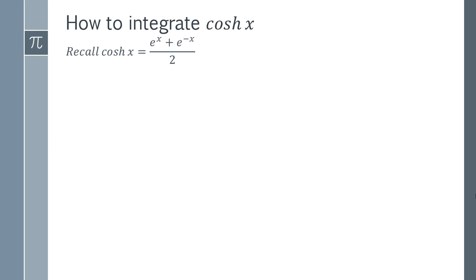We've actually got something that's a bit nicer to integrate. Instead of integrating something we don't know, we're going to integrate things that are more familiar. We need to integrate e to the x and e to the minus x. We're going to take a factor of a half out of the integration and split this into two different integrations.